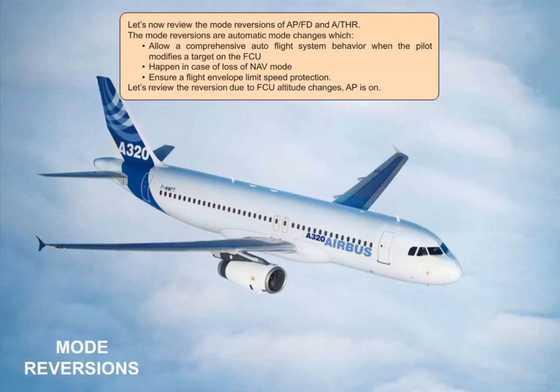Let's now review the mode reversions of autopilot flight director and autothrust. The mode reversions are automatic mode changes which allow comprehensive autoflight system behaviour when the pilot modifies a target on the FCU. They happen in case of loss of navigation mode and ensure flight envelope limit speed protection. Let's review the reversion due to FCU altitude changes.